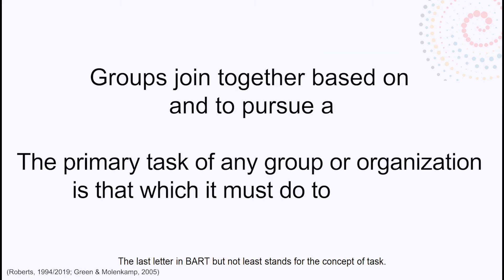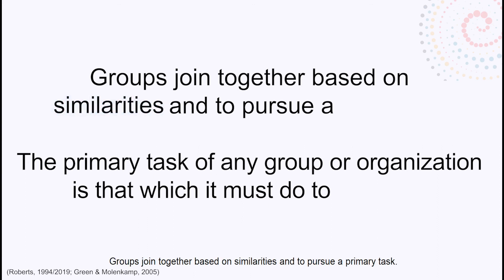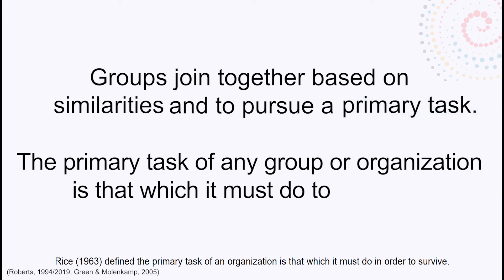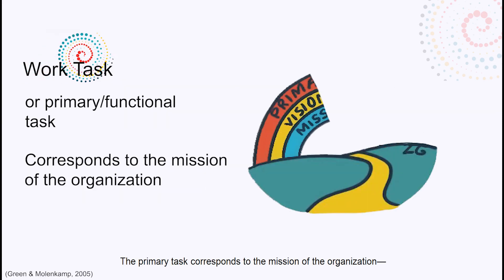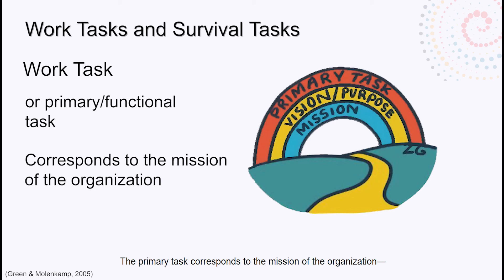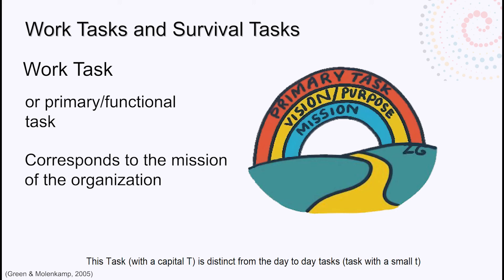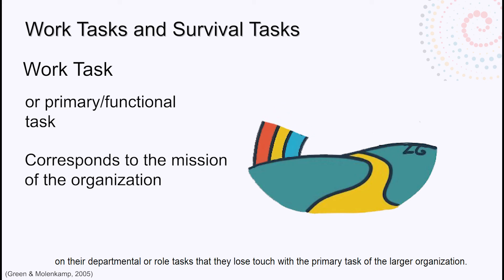The last letter in BART — but not the least — stands for the concept of task. Groups join together based on similarities and to pursue a primary task. Rice defined the primary task of an organization as that which it must do in order to survive — it corresponds to the mission of the organization, that is, why the organization exists and the outputs it produces. This Task with a capital T is distinct from the day-to-day tasks with a small t that employees complete as part of their role. Sometimes people in different departments may be so focused on their departmental tasks that they lose touch with the primary task of the larger organization.